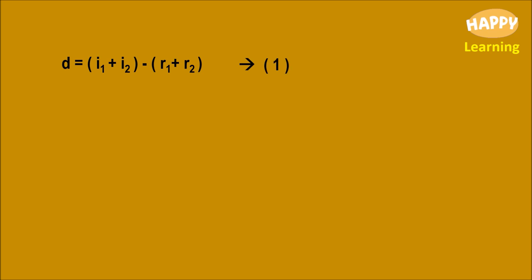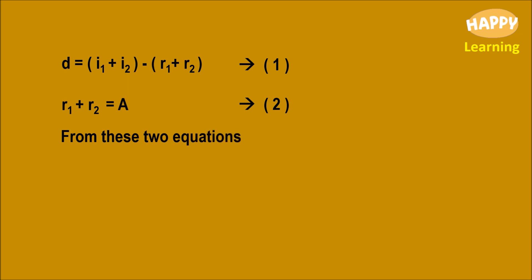Equations 1 and 2 are rewritten. From these two equations, we can write D equal to I1 plus I2 minus A. On rearranging, I1 plus I2 is equal to A plus D. Let this be equation number 3.